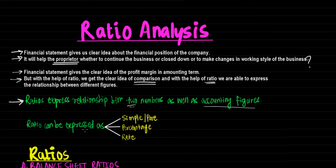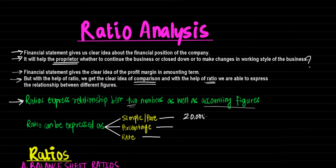A ratio can be expressed in three types: first is simple or pure, second is percentage, and third is rate. For example, if current assets are Rs 20,000 and current liabilities are Rs 4,000, this ratio comes to 5:1. This is a simple or pure ratio.